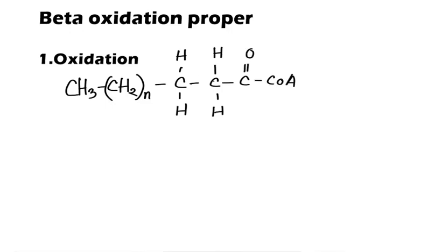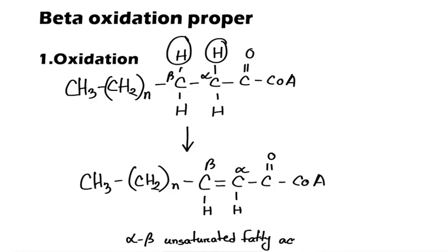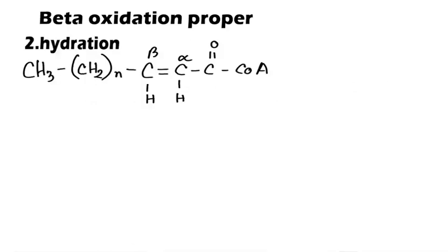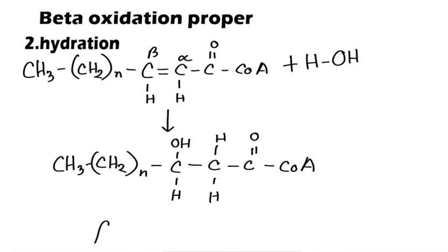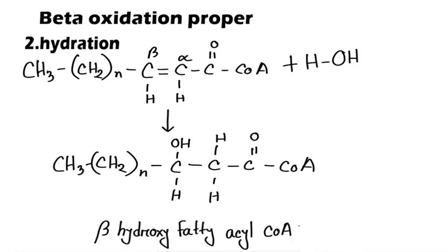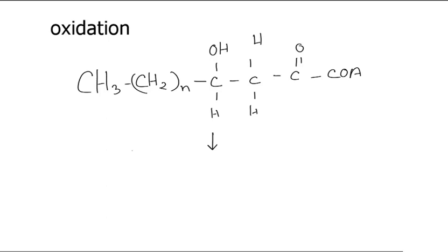The first step is oxidation, also called dehydrogenation — that means removal of hydrogen atoms. Here, hydrogen atoms from the alpha and beta carbons are removed, so a trans double bond is formed between alpha and beta carbon. This is now called alpha-beta unsaturated fatty acyl-CoA. The two hydrogen atoms which have been removed reduce FAD to FADH2, so it is a site of ATP production. The second step is called hydration, which means addition of water. Here, water is added across the trans carbon-carbon double bond and it forms a hydroxyl group at the beta carbon. Now it is called beta-hydroxy fatty acyl-CoA.